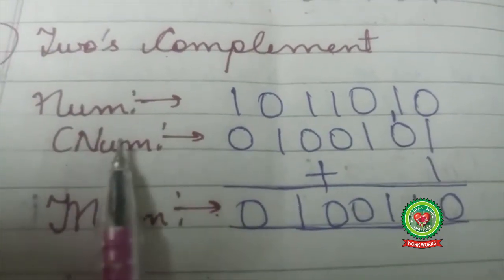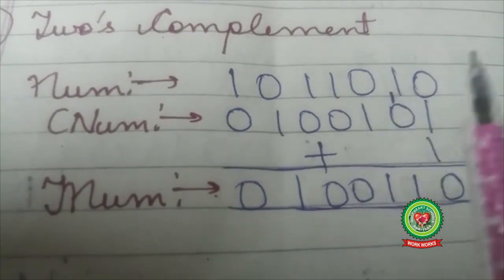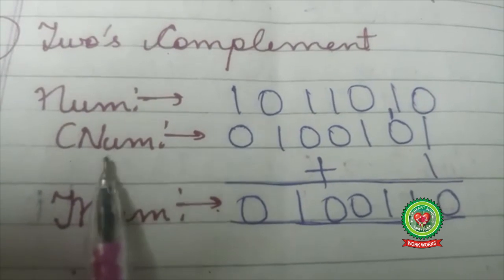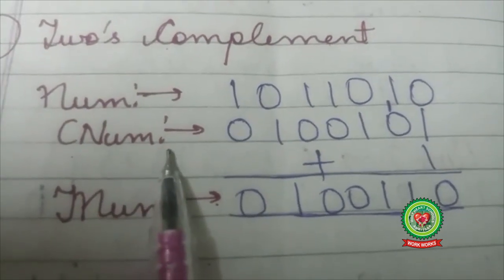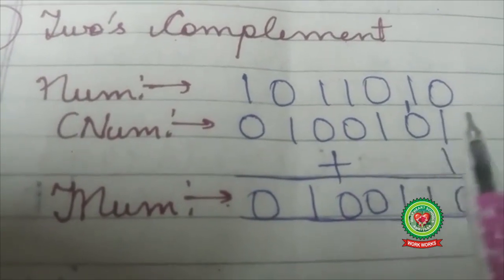Example: let us consider a number 1 0 1 1 0 1 0. Now its one's complement will be 0 1 0 0 1 0 1.